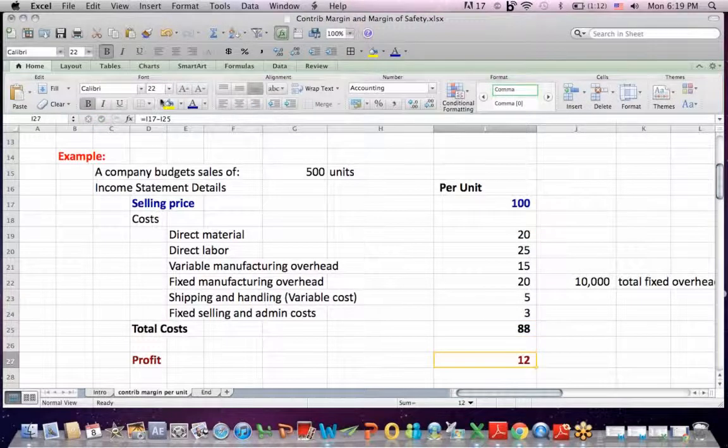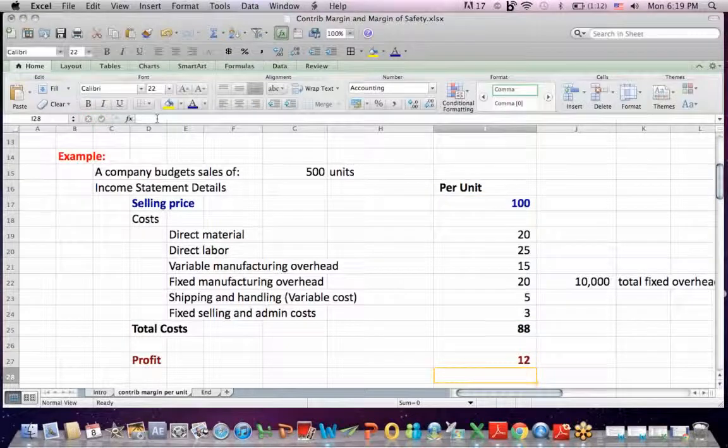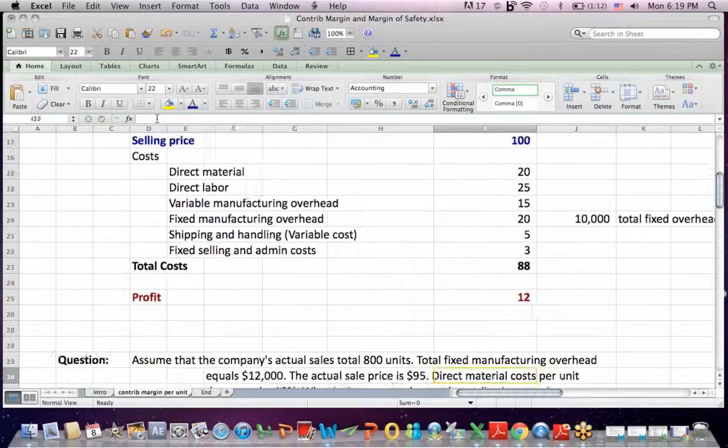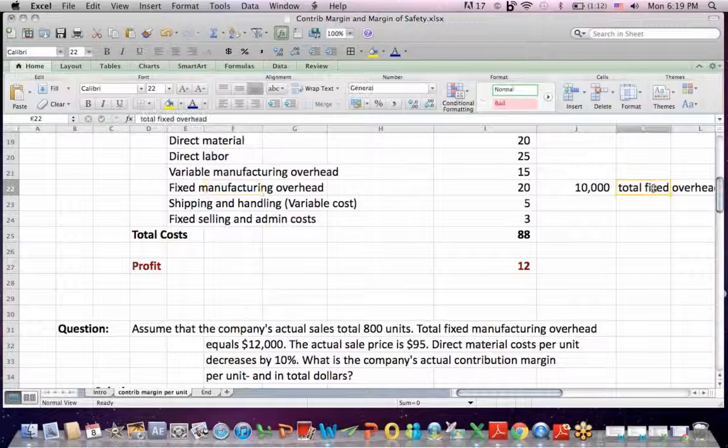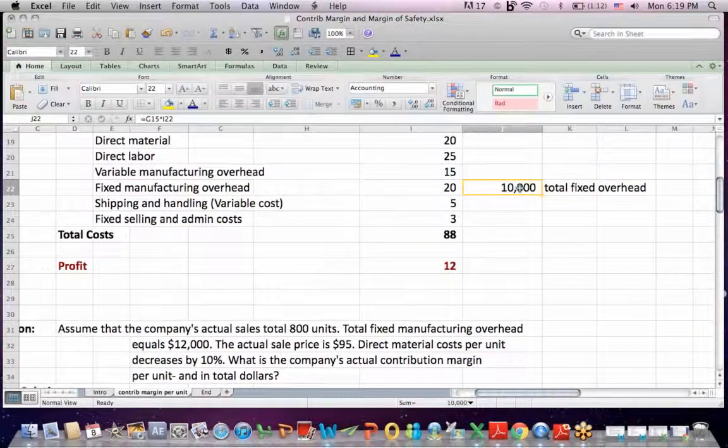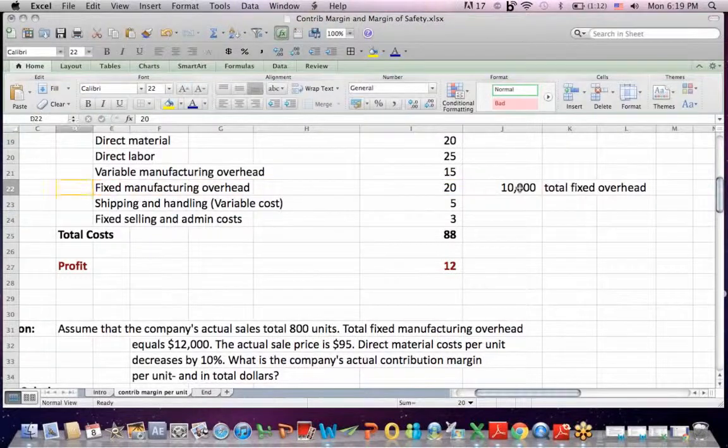And if I look at it on a per unit basis, 100 units less 88 is a profit of 12. And you'll note off to the right that our total fixed overhead is $10,000. We have to cover that regardless of how many units we sell or produce.